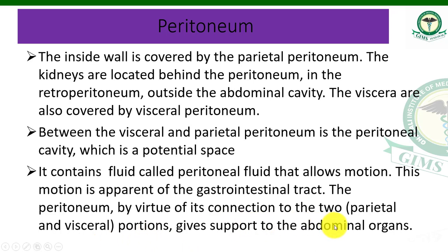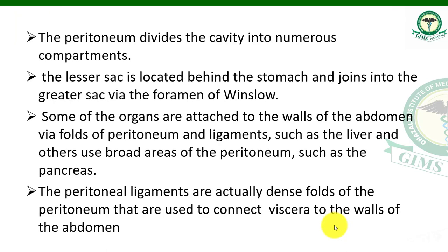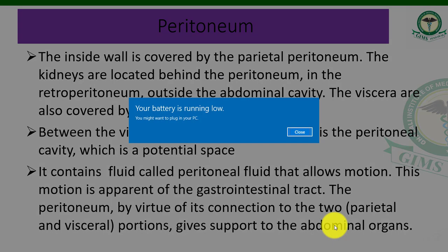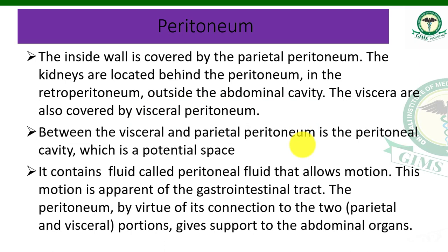The peritoneum, by virtue of its connection to the lower parietal and visceral portions, gives support to the abdominal organs. Because of the two layers of peritoneum — parietal and visceral — attached to the organs, it supports the abdominal organs. The peritoneal fluid acts as a shock absorber: if force is applied from outside, that force is absorbed by the fluid, protecting internal organs from damage.